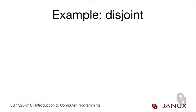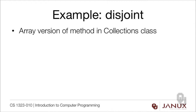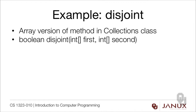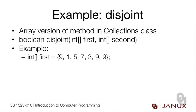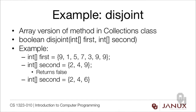Let's look at a couple of examples in real methods. The first is disjoint — an array version of a method actually in the Collections class. The signature is: boolean disjoint with two arrays, first and second. Disjoint is a discrete mathematics term meaning no elements are shared between the two arrays. For example, if first contained 9, 1, 5, 7, 3, 9, 9 and second contained 2, 4, 9, disjoint would return false because they both contain a nine. If second contained 2, 4, 6 instead, the method would return true — none of the integers in second are in first.